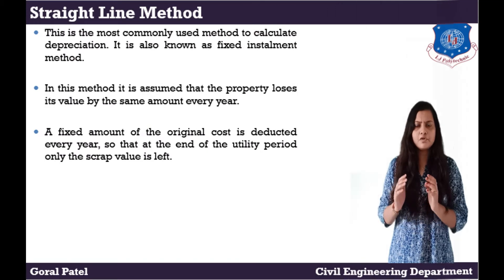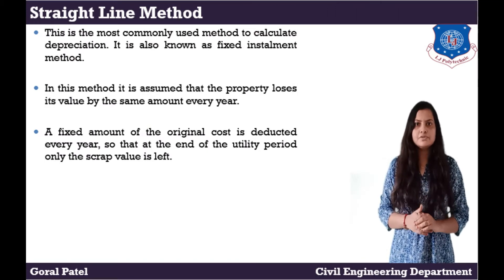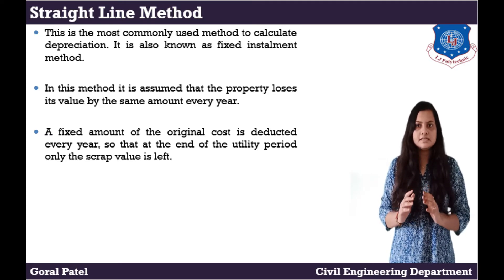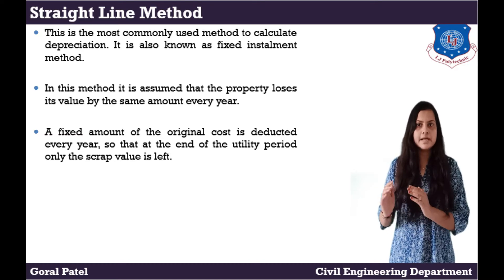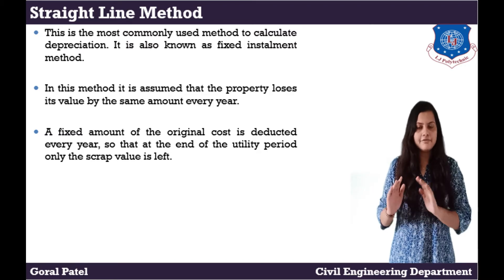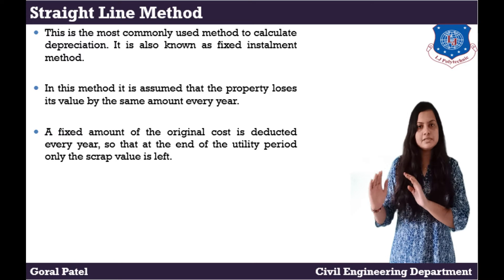Let's start with what is the straight line method. This is the most commonly used method for calculating depreciation. It is also known as the fixed installment method. In this method, it is assumed that the property loses its value by the same amount every year. A fixed amount of the original cost is deducted every year, so that at the end of the utility period, only the scrap value is left.